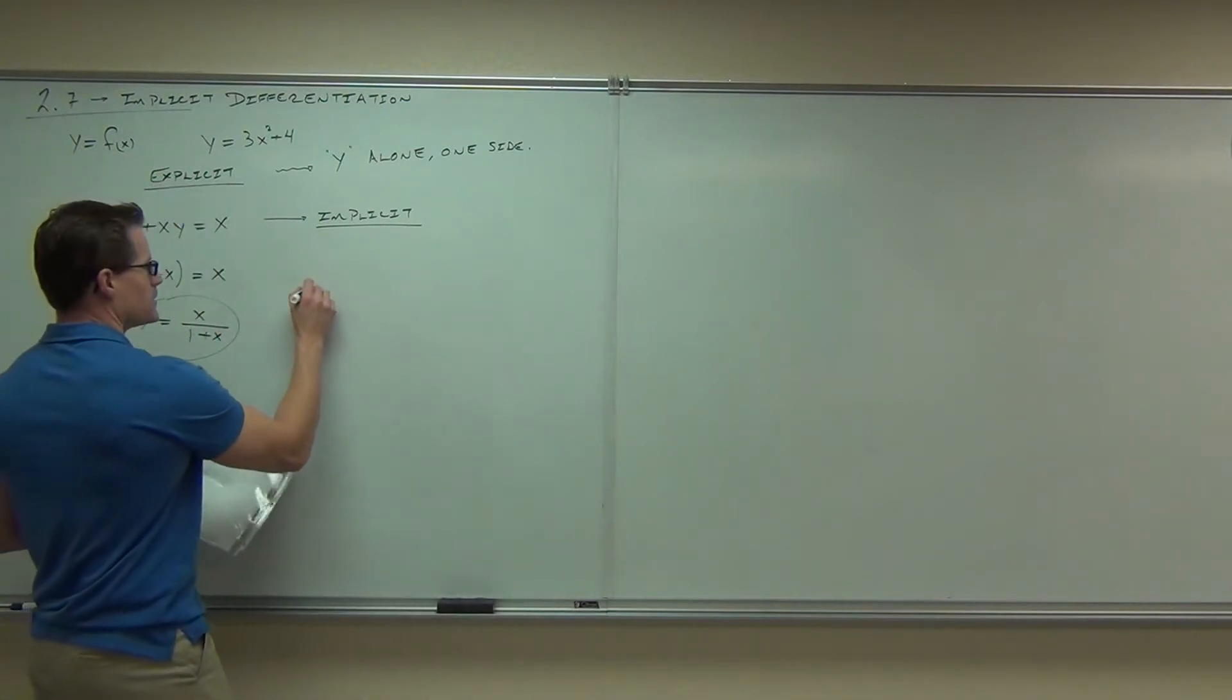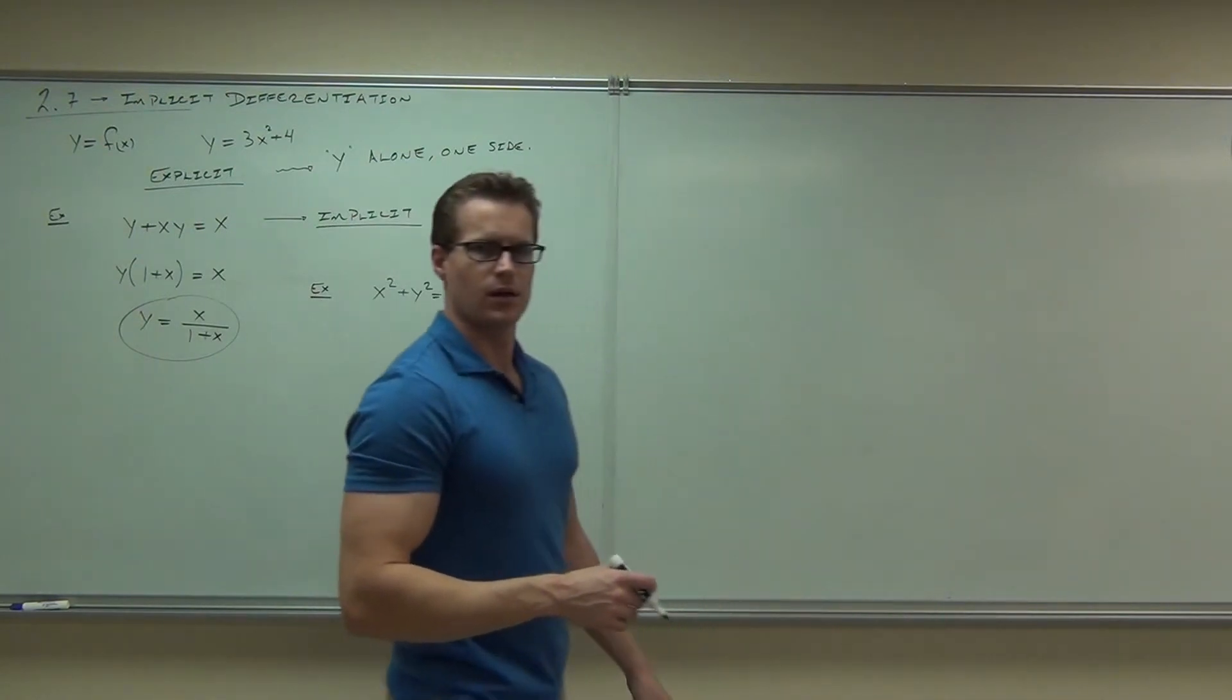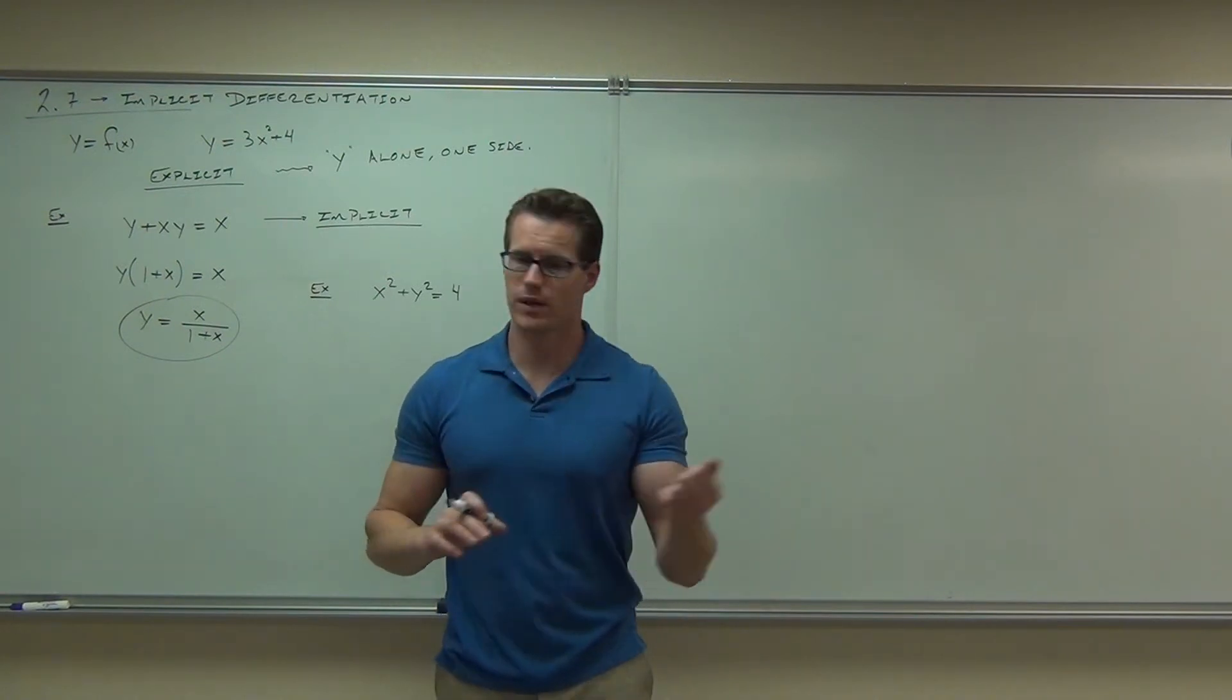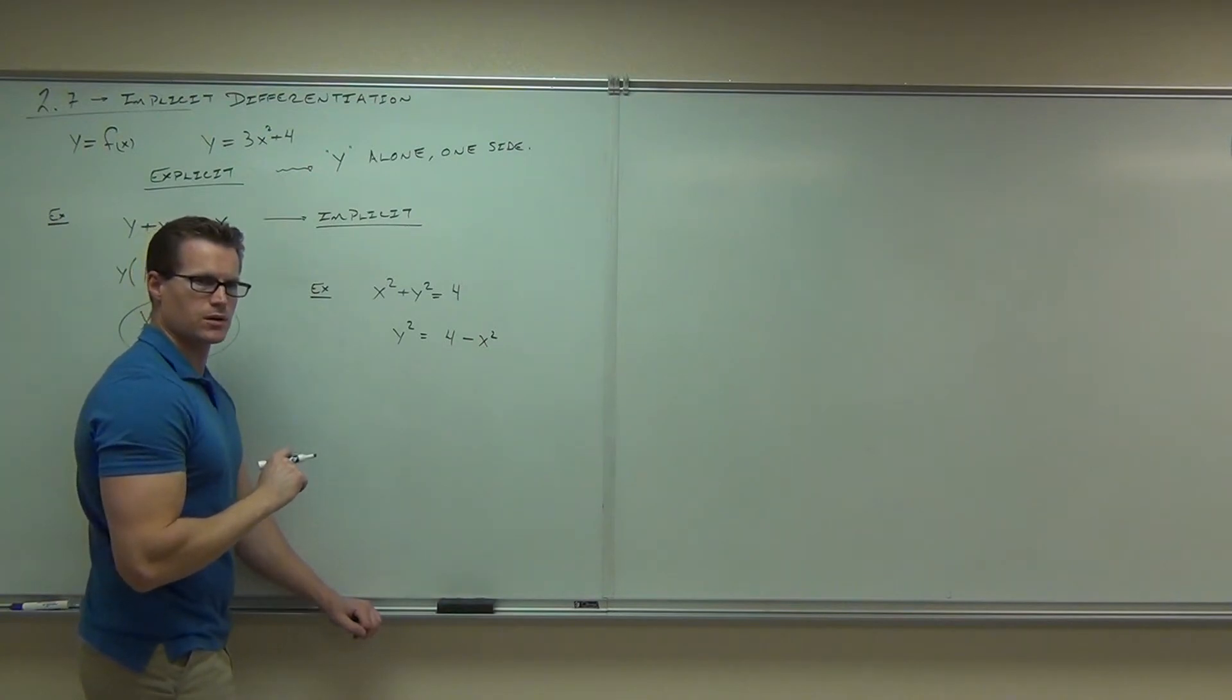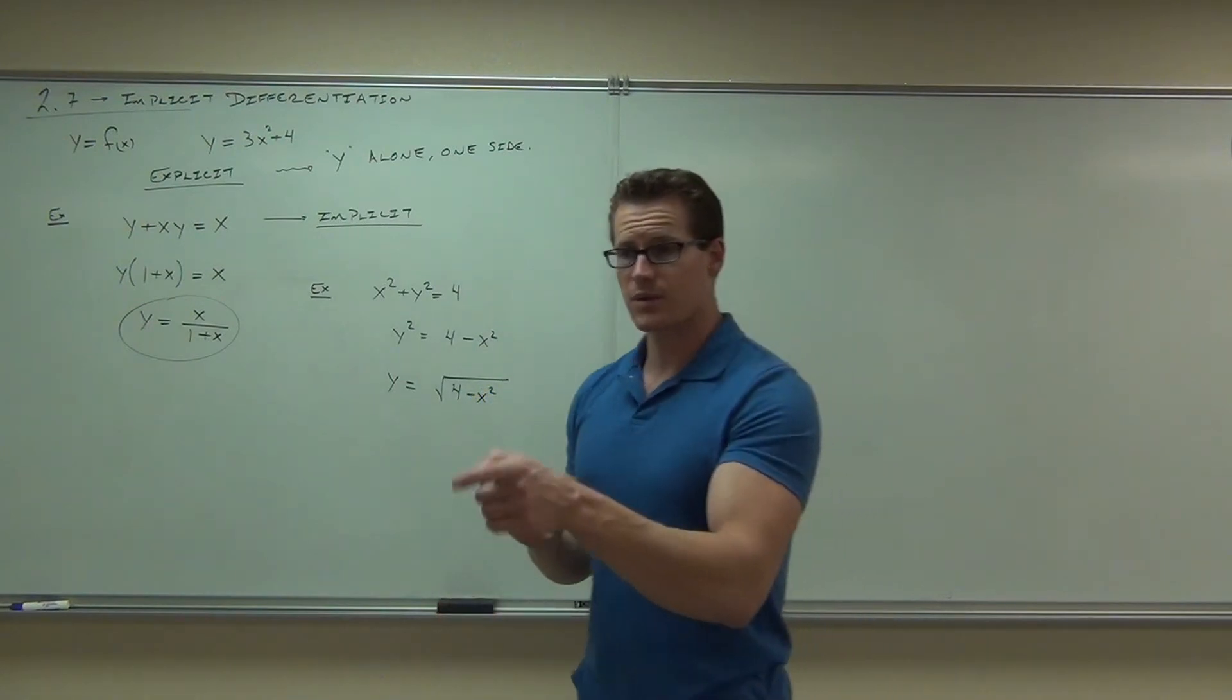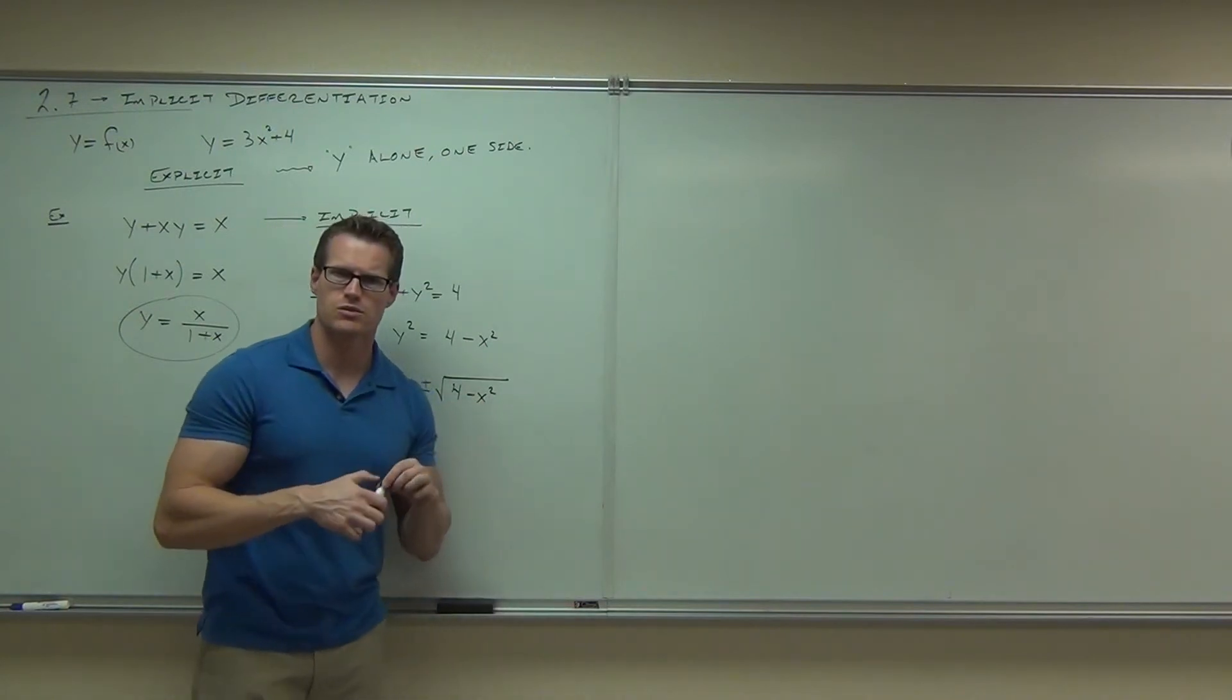How about this one? Would you say this is implicit or explicit? Implicit. Could you solve it for y? Okay, let's try. We solve for y. We're going to get y squared equals 4 minus x squared. And how would you get y by itself? So y would equal the square root of 4 minus x squared. True or false? Think carefully. What's wrong? Very good, because when you take a square root, you have to put the plus or minus, right?